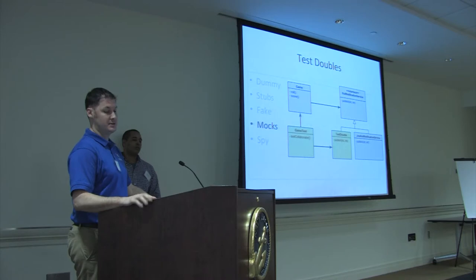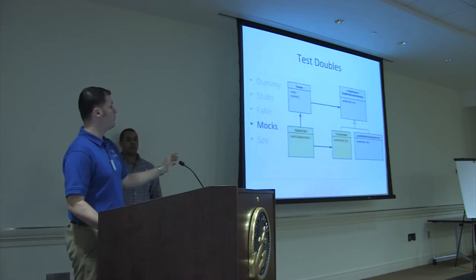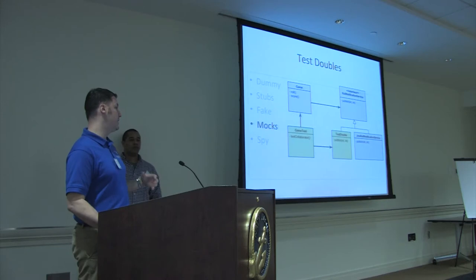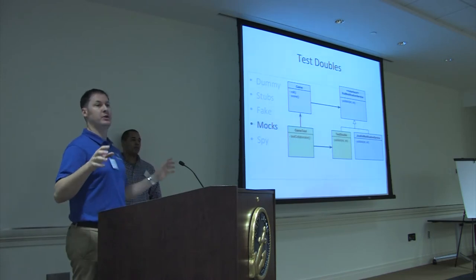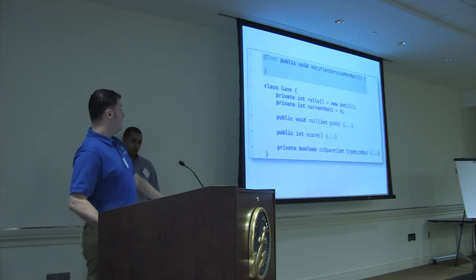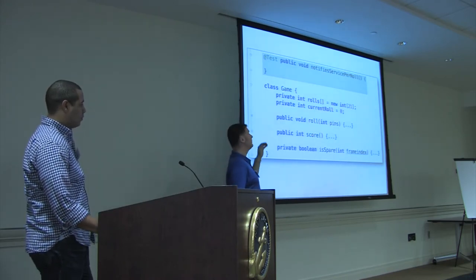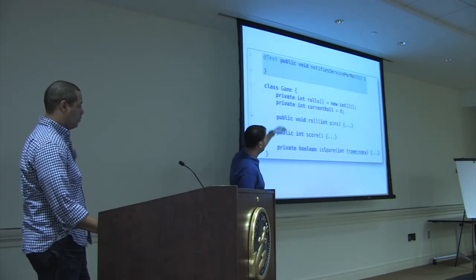The one we're going to cover is mocks. One of the great things about mocks is that you can set up your expectations beforehand in your test. As opposed to creating an additional class, you can control the behavior of external dependencies within that test itself. We're going to create a brand new test: the notify-service-per-roll test. When Mike talked earlier about readability, what we want to test is that we're notifying the service when we make a roll. We have all our previous tests, our game as before, and this new notify-service-per-roll test.